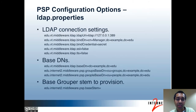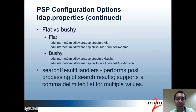Now we'll talk about the various configuration files that are part of the PSP. First, there's the LDAP.properties file. You have to specify the LDAP connection settings. The bind credential may point to a file on the file system with an encrypted password. You also have to specify the base DNs and the base Grouper stem to provision — this allows you to provision only a subset of your Grouper hierarchy to the target. You can specify whether to provision using the flat or bushy structure. You can also specify search result handlers, which allow post-processing of LDAP search results. The default value is probably okay in most cases.